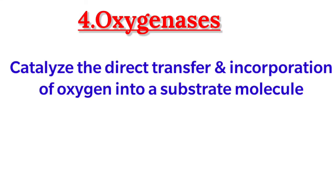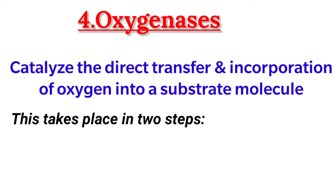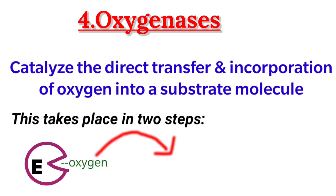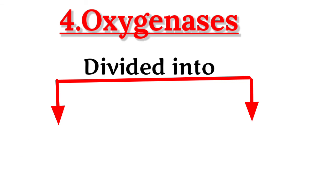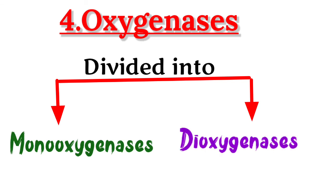Coming to the fourth group of oxidoreductases, that is oxygenases: these enzymes catalyze the direct transfer and incorporation of oxygen into a substrate molecule. This involves two steps — first, oxygen is bound to the enzyme at the active site, and then this bound oxygen is transferred to the substrate. Oxygenases are classified into two: monooxygenases and dioxygenases.